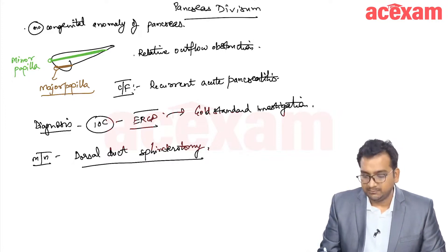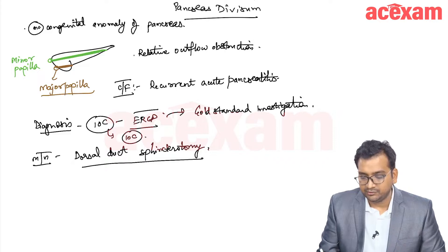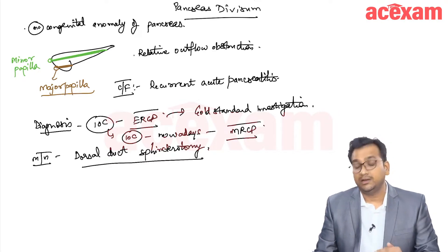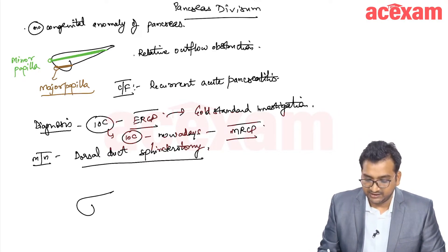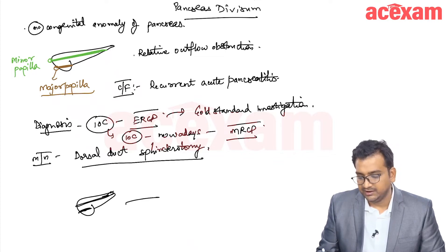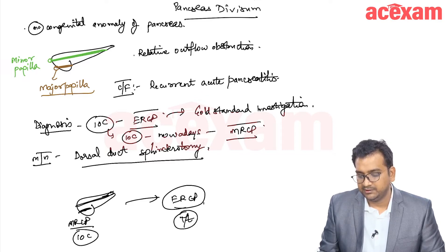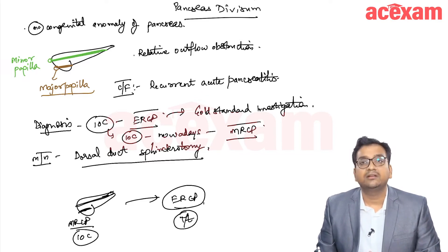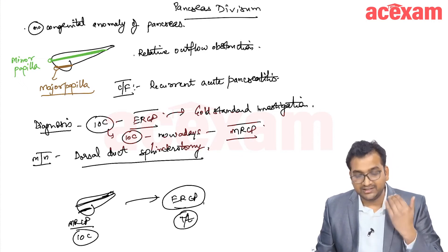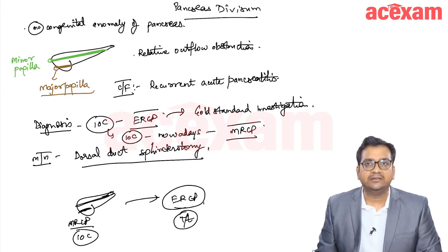Nowadays we are doing MRCP. The investigation of choice nowadays is MRCP. We first do MRCP to see that there is divided drainage and two separate ducts without any communication, and then we will go for ERCP for treatment purposes. The gold standard for diagnosis as well as treatment is ERCP.